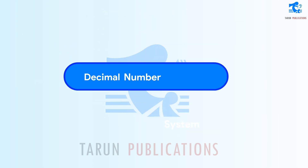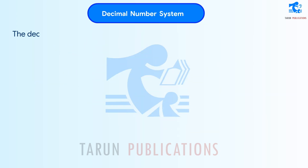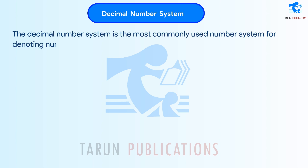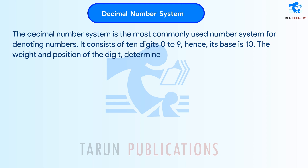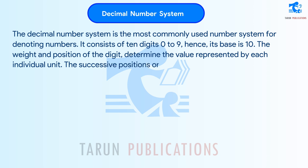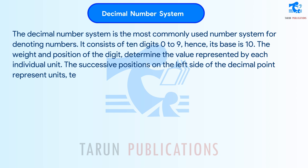Decimal number system. The decimal number system is the most commonly used number system for denoting numbers. It consists of 10 digits, 0 to 9, hence its base is 10. The weight and position of the digit determine the value represented by each individual unit. The successive positions on the left side of the decimal point represent units, tens, hundreds, thousands, and so on.